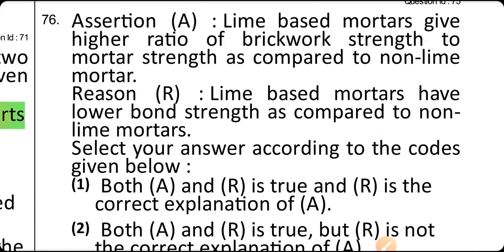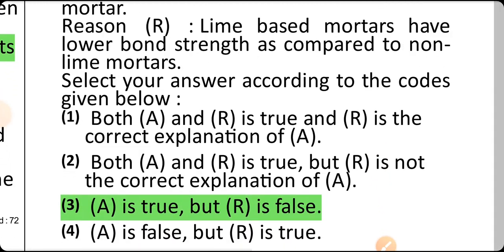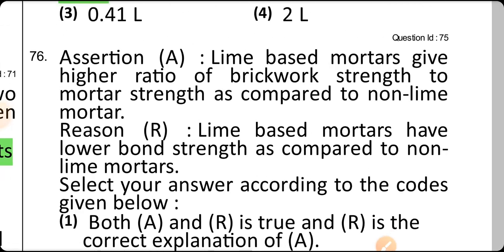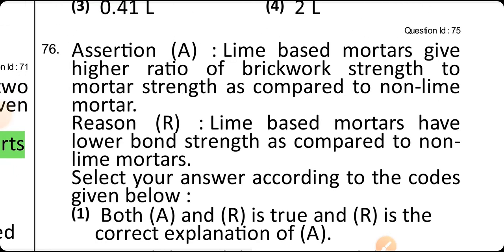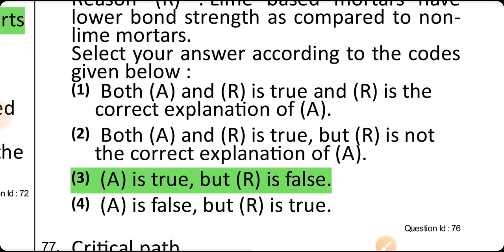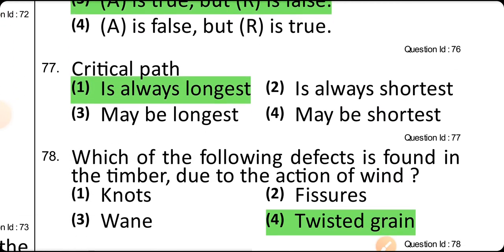Assertion: a lime-based mortar gives a higher ratio of brickwork strength to mortar strength as compared to non-lime mortar — correct. Reason: lime-based mortar has lower bond strength as compared to non-lime mortar — correct. The right answer is that A is true but R is false.